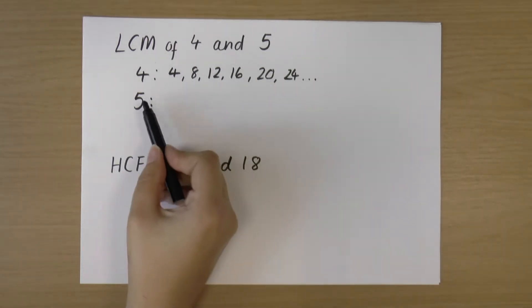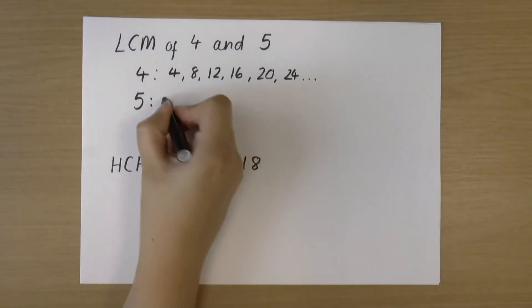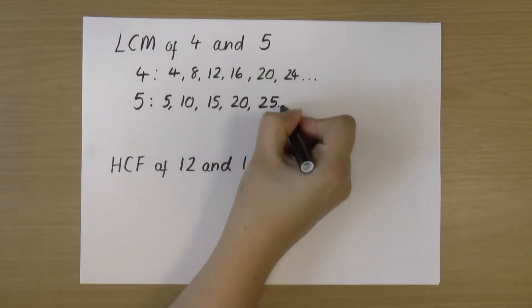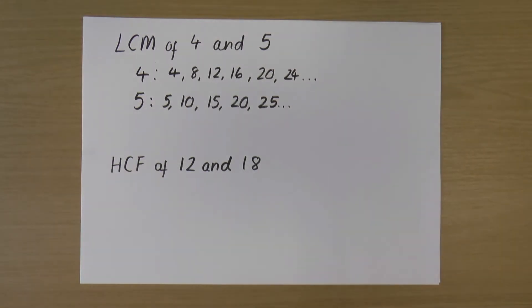And now I'm going to do the multiples of 5. So again, that's just the 5 times table. So 5, 10, 15, 20, 25, and again dot dot dot.